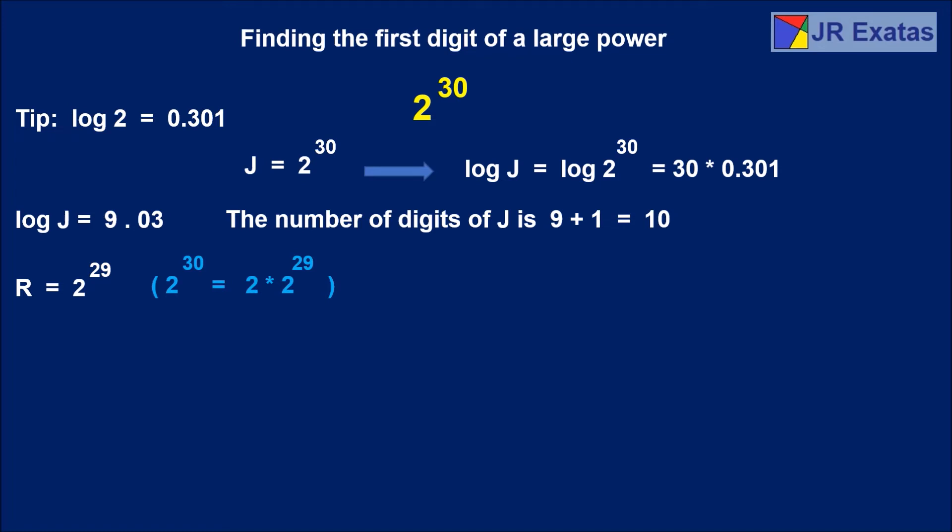R equals 2 to the 29. Taking log R equals 29 times 0.301 equals 8.729. Applying logarithm we can say now that R has 8 plus 1 digits. R has 9 digits.